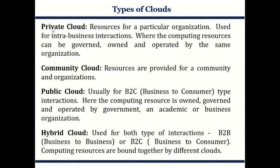There are basically four types of cloud: private, community, public, and hybrid. A private cloud is for a particular organization or person who does not want to share it with any other person or organization. It is owned and operated by the same organization and is not shared. A community cloud, as the word suggests, is shared between some organizations — for example, an institute with four or five different campuses in a city might access a shared cloud for all campuses together.